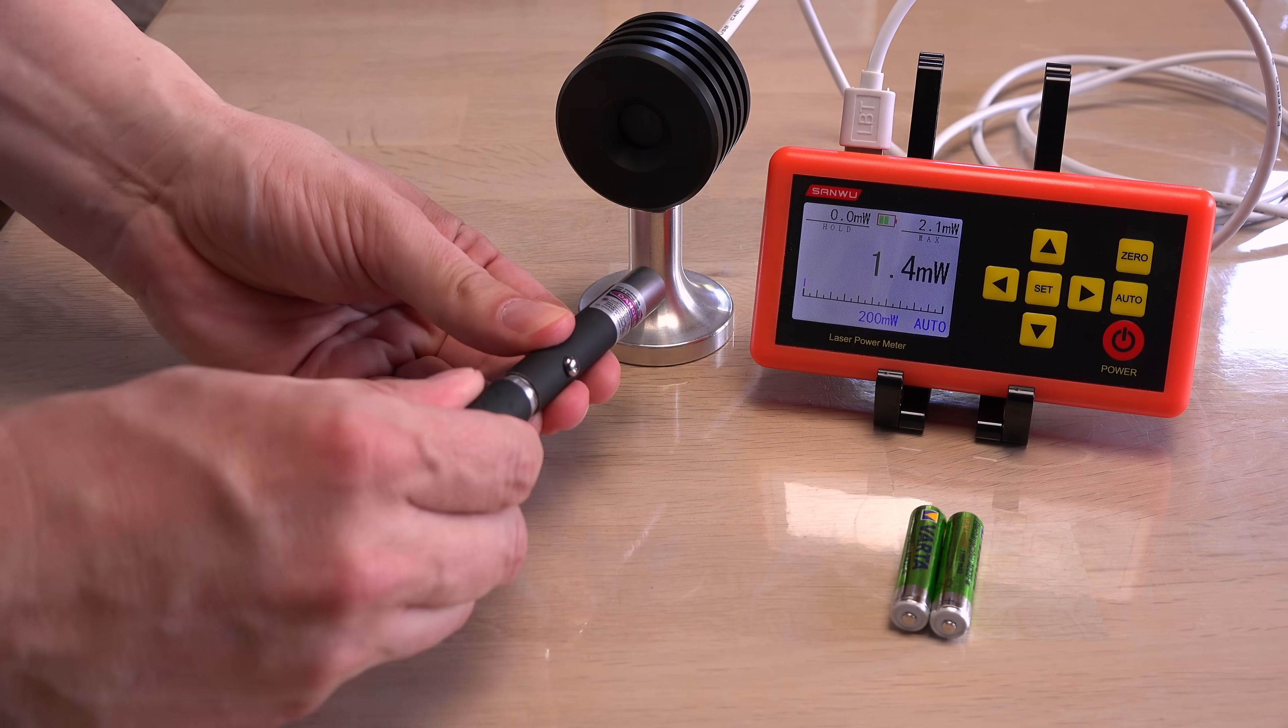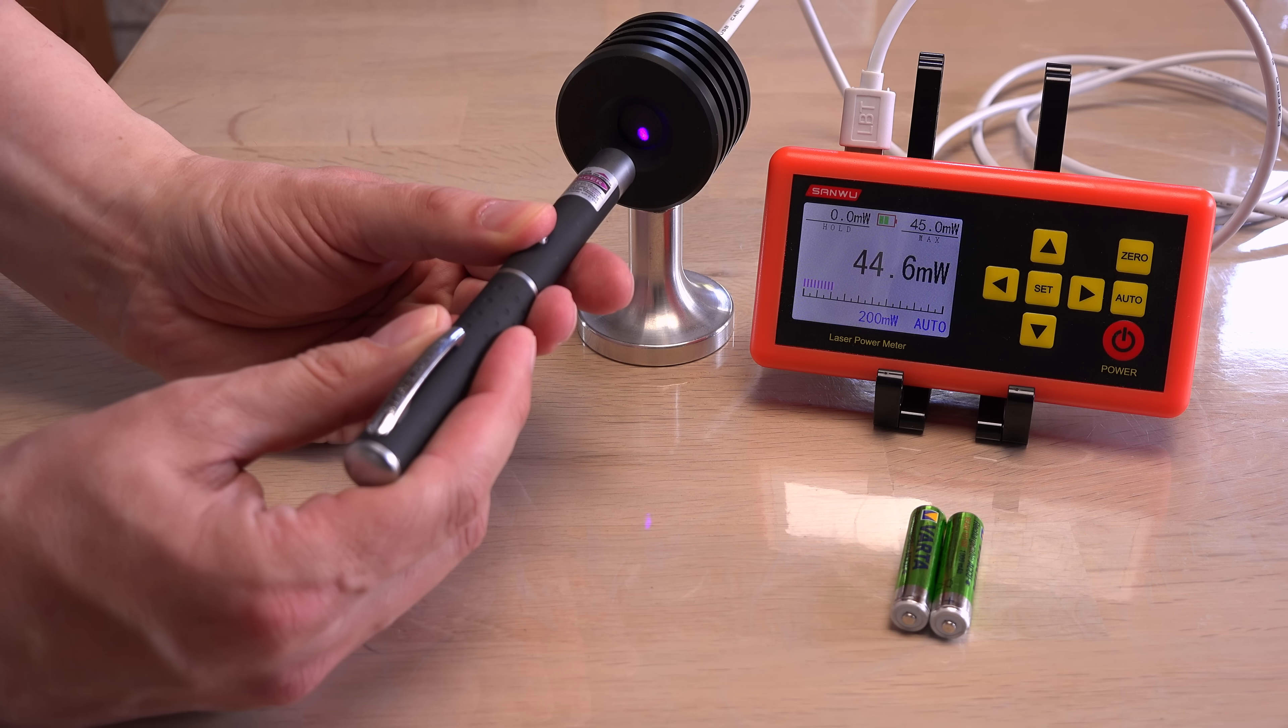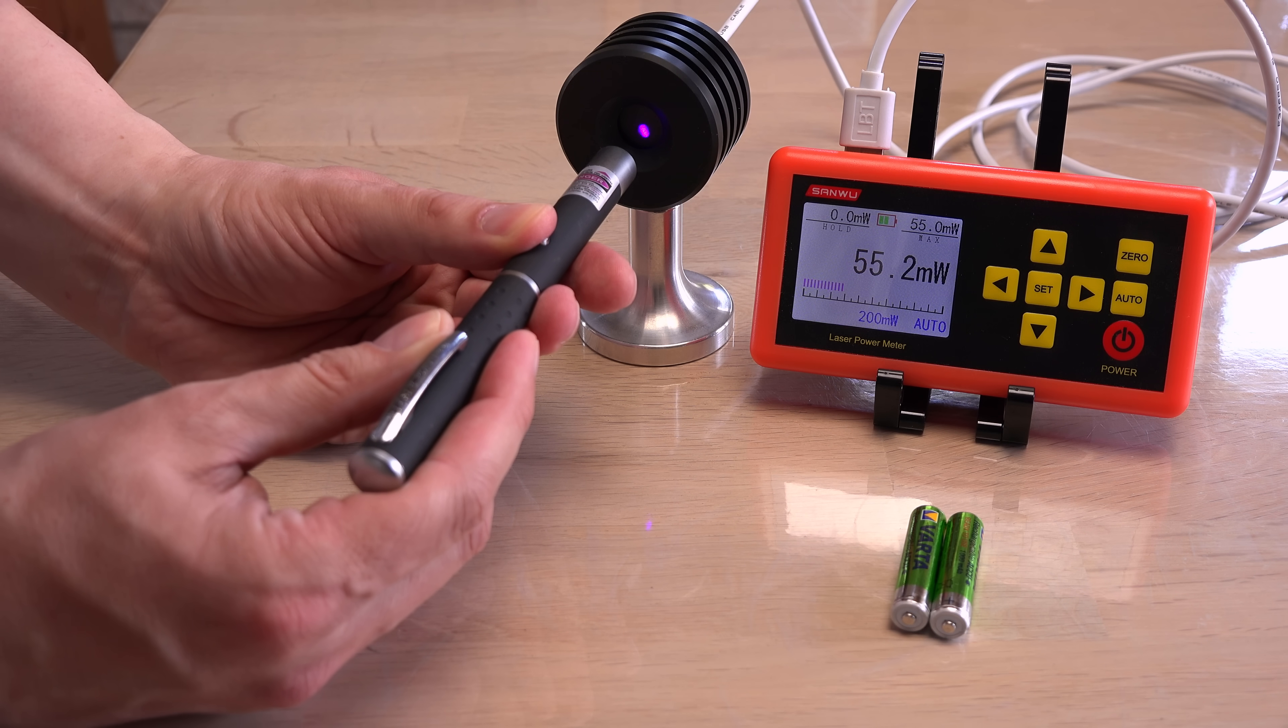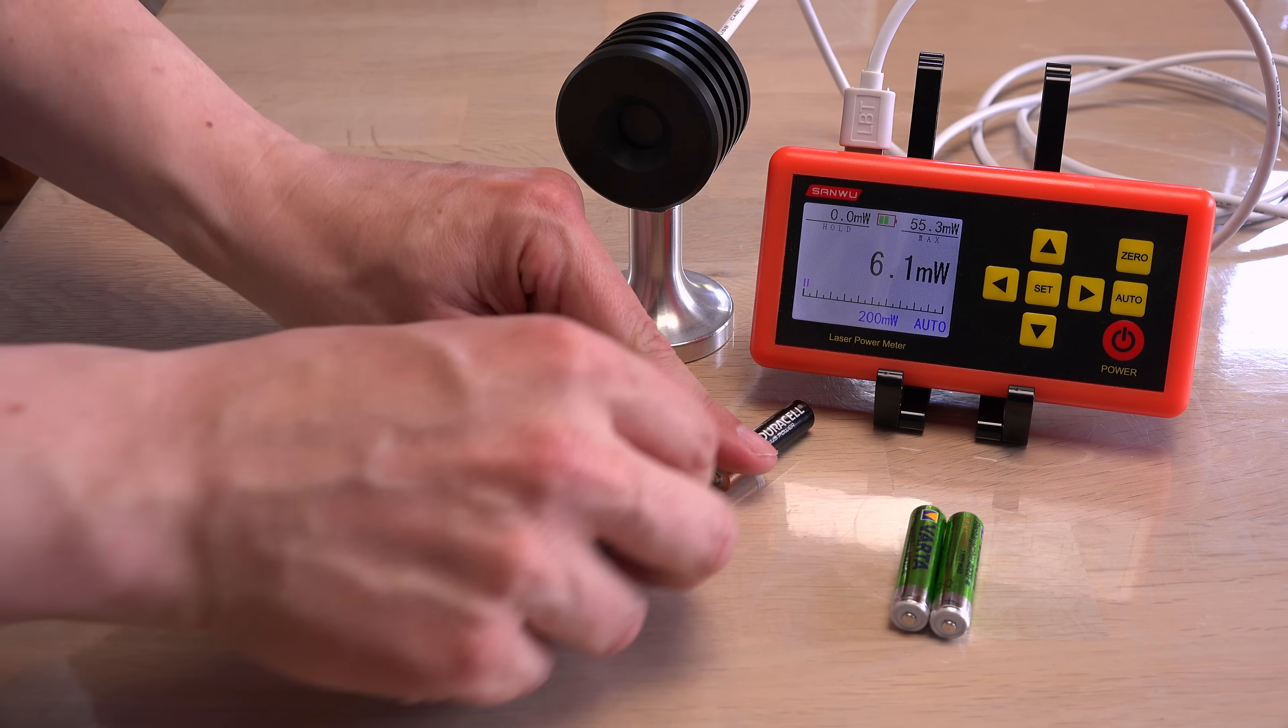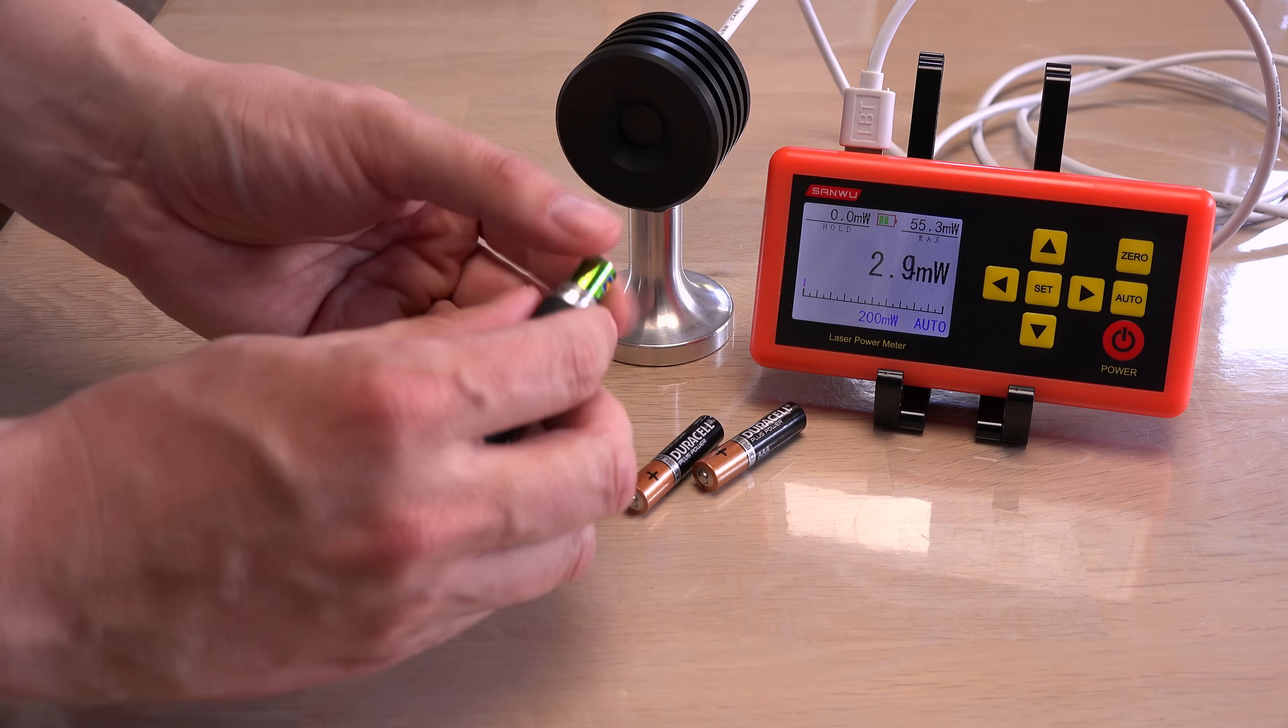I will start with the alkaline batteries that were used earlier in the filter test. Still well over 5 milliwatts, around 55. How low will it be using the rechargeable batteries with 20% lower voltage?